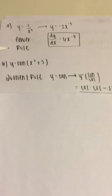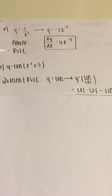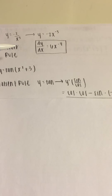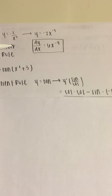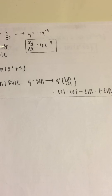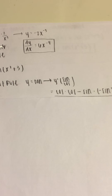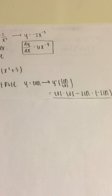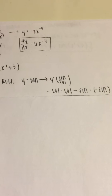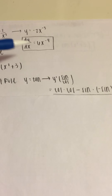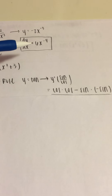To solve this, we are going to use the power rule. We multiply negative 3 by negative 2x, which gives 6x, and subtract 1 from the power negative 3 to get negative 4. So the answer is 6x to the negative fourth power.